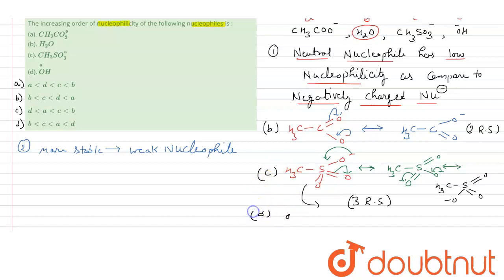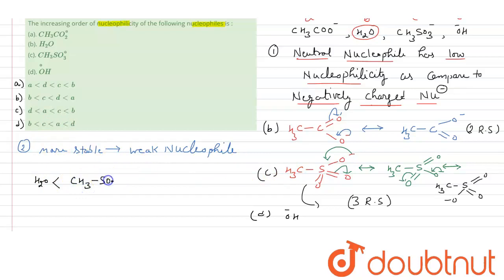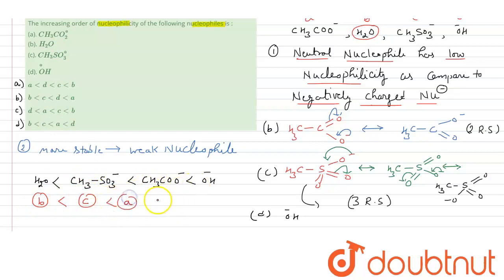For option D, OH⁻, there is no resonating structure, so it is a strong nucleophile. Arranging them: water (B) is the weakest as a neutral nucleophile, then CH₃SO₃⁻ (C), then CH₃COO⁻ (A), and OH⁻ (D) has the highest nucleophilicity. So the increasing order is B < C < A < D.